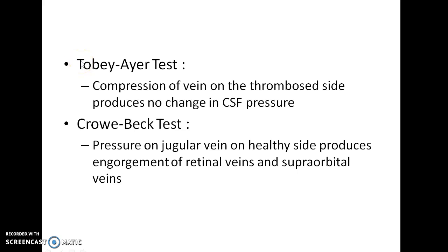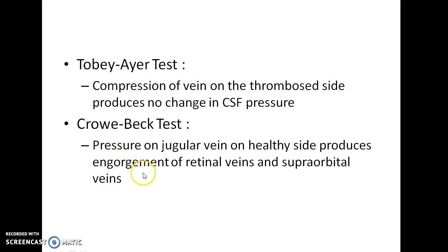Papilledema and tenderness along the jugular vein will also be seen in lateral sinus thrombophlebitis. There are two special tests: the Tobey-Ayer test and the Crowe-Beck test. In the Tobey-Ayer test, compression of the vein on the thrombosed side produces no change in CSF pressure, whereas normally this should lead to a rise in CSF pressure. In the Crowe-Beck test, pressure on the jugular vein on the healthy side produces engorgement of retinal veins and supraorbital veins. These two tests are characteristic of lateral sinus thrombophlebitis.